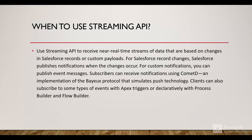When to use Streaming API? We will use Streaming API to receive near real-time streams of data based on changes in Salesforce records or custom payloads. For Salesforce record changes, Salesforce publishes notifications when changes occur. For custom notifications, we can publish event messages. Subscribers can receive notifications using CometD, which is an implementation of the Bayeux protocol that simulates push technology.